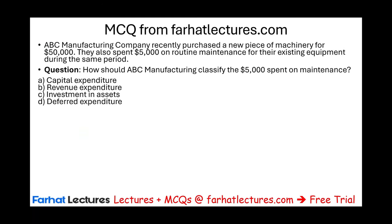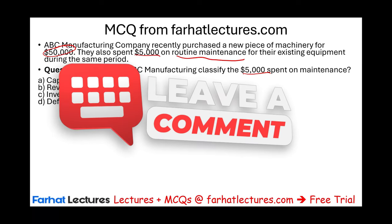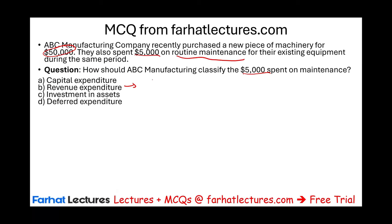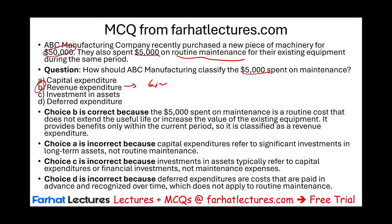Let's look at a multiple choice question from FarhatLectures.com. ABC Manufacturing Company recently purchased a new piece of equipment for $50,000 and also spent $5,000 on routine maintenance for their existing equipment during the year. How should ABC classify the $5,000 spent on maintenance? The $50,000 is clearly a capital expenditure — it's an asset. The $5,000 is routine maintenance, which means it's a revenue expenditure — we treat it as an expense. The answer is B. The word 'routine' gives it away: routine means recurring, and recurring expenditures are not providing future benefit, making them revenue expenditures, not capital expenditures.